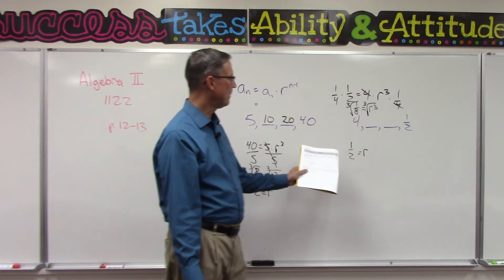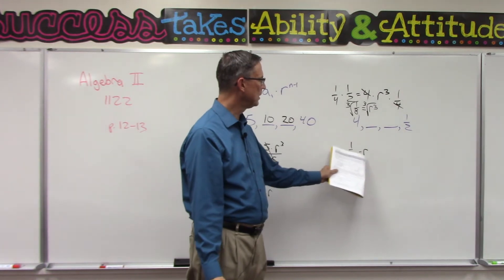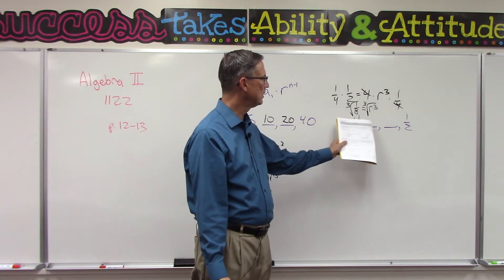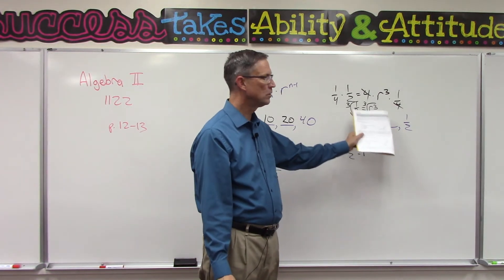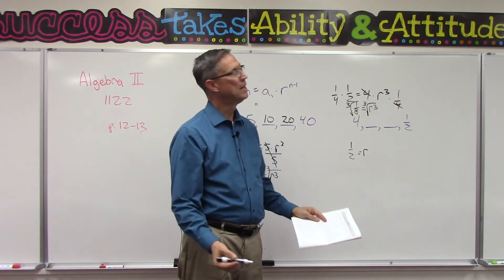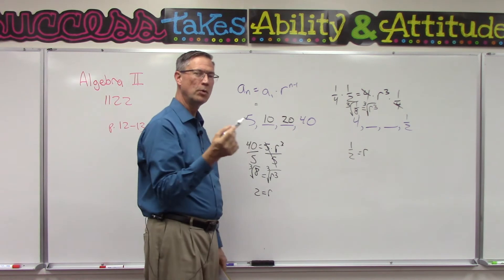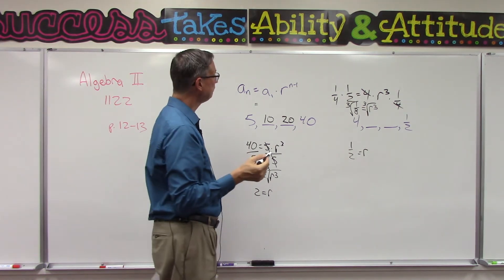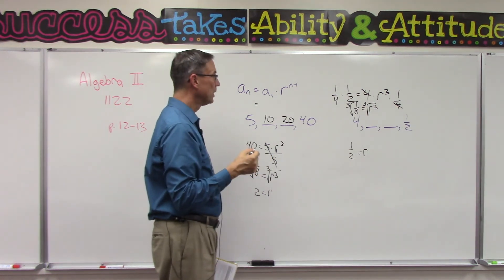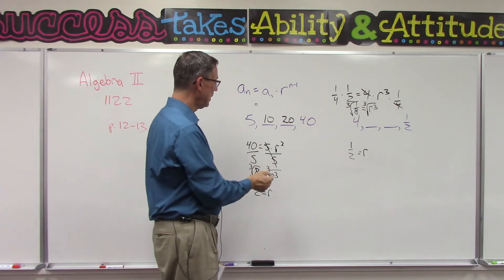I'm going to let you finish that, but you know what to do now. You take the r value times the first term, you get the second. Take the r value times the second term, you get the third one. All we did was use this same formula. You just have to know what all those letters mean and what to plug in.